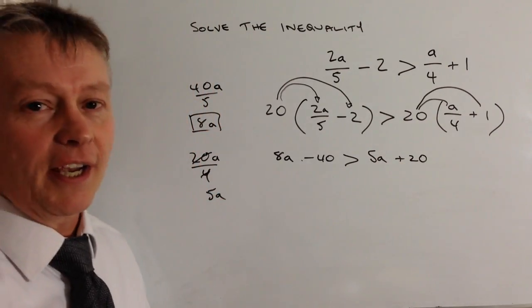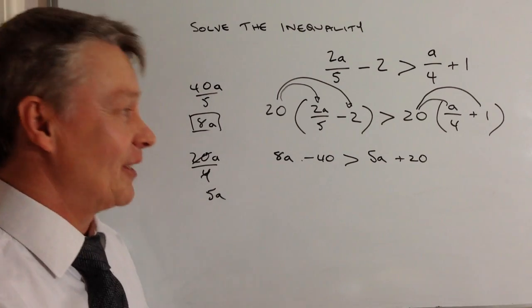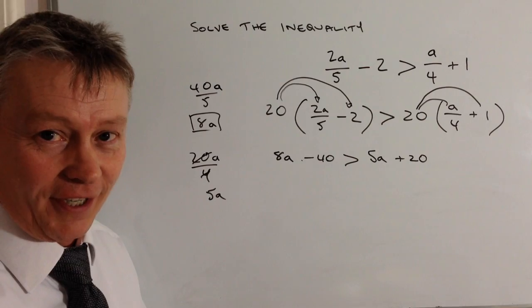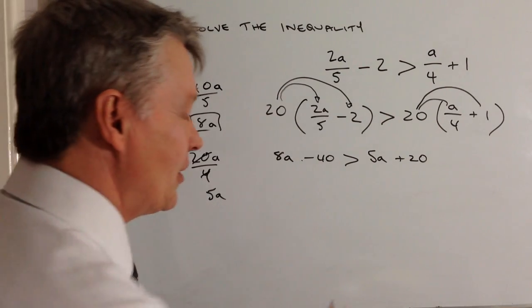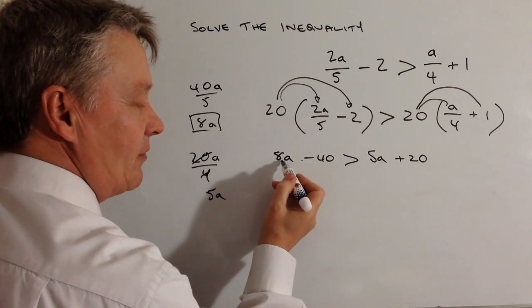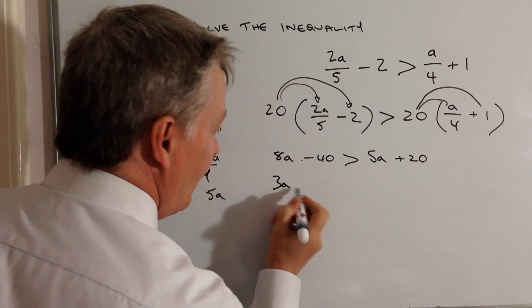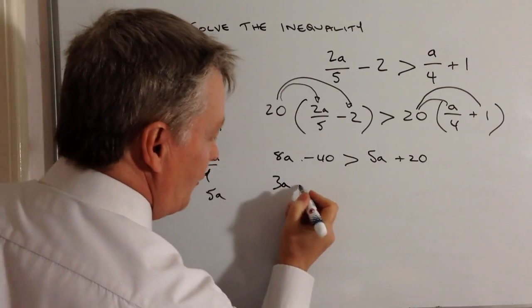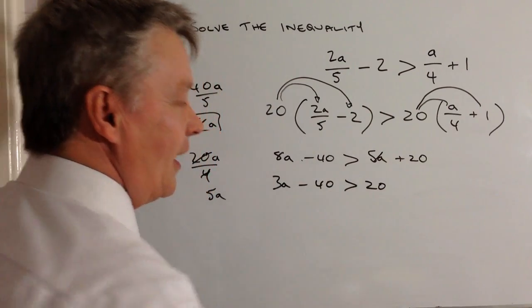Then it's a case of putting all the a terms on the left side and the numbers on the right, just like with a linear equation. I'll subtract 5a from both sides. 8a minus 5a is 3a, so I have 3a - 40 > 20.